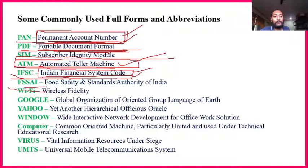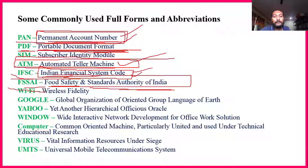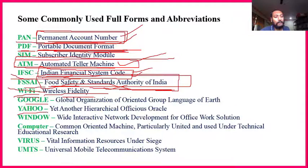FSSAI — Food Safety and Standards Authority of India — is important. They have a protocol to ensure food safety standards. Wi-Fi — Wireless Fidelity — everyone knows this. Google and Yahoo are search engines; Windows is an operating system — not specifically important as abbreviations.